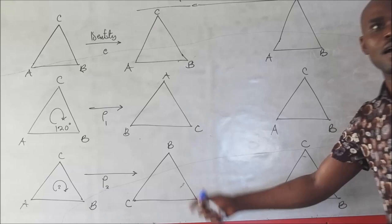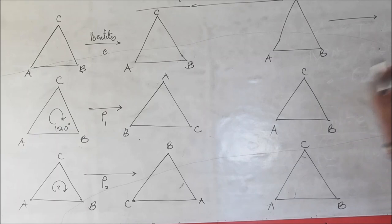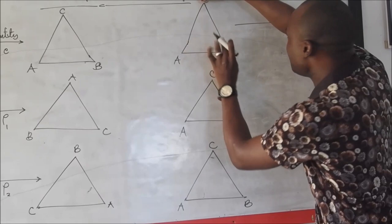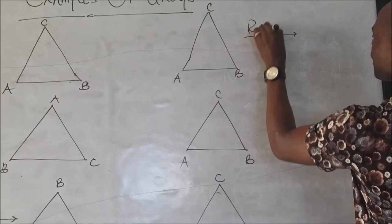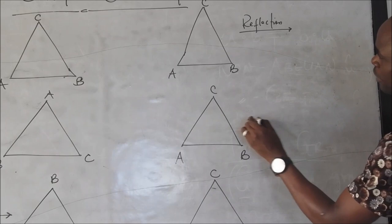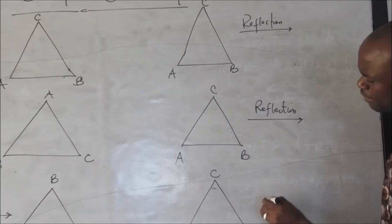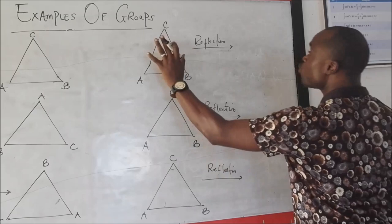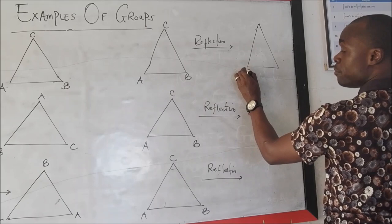Here I can rotate this — I'll flip this time. So I can put my hands here and actually flip this triangle. So I can call this a reflection — it's actually a flip. So I have a reflection here, and another reflection. If I flip it this way, C will remain constant but I have B and A interchange.